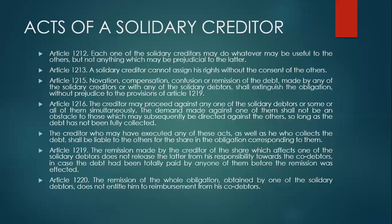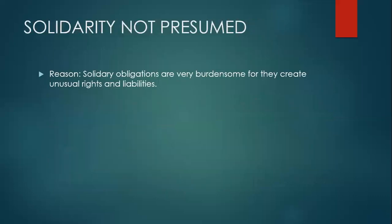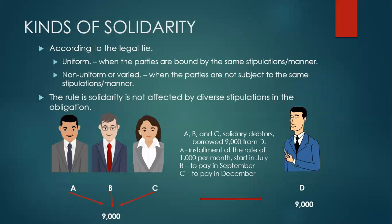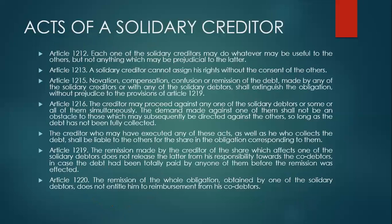Article 1216: the creditor may proceed against any one of the solidary debtors, or some or all of them simultaneously. The demand made against one of them shall not be an obstacle to those which may be subsequently directed against the others, so long as the debt has not been fully collected. The creditor can proceed against any of the solidary debtors — it is the creditor's choice whom to collect from.